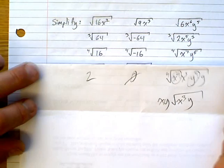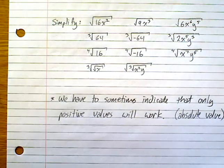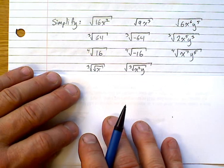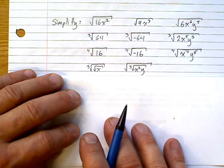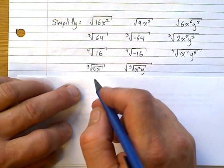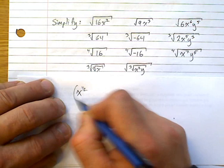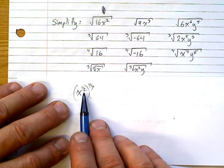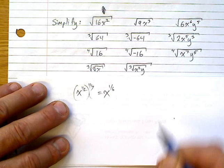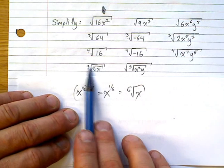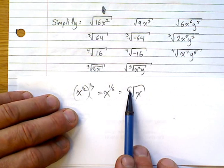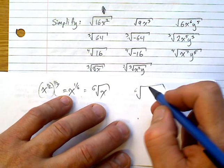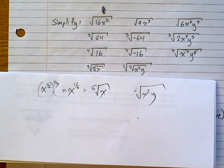Nested radicals can be handled using exponents. The cube root of √x: √x is x to the one-half, and then raising to the one-third power gives x to the one-sixth by the power-to-a-power rule (multiply exponents). That's the sixth root of x. In general, multiply the indices together. So the cube root of the square root gives a sixth root, and a cube root inside a sixth root gives the sixth root of x²y.